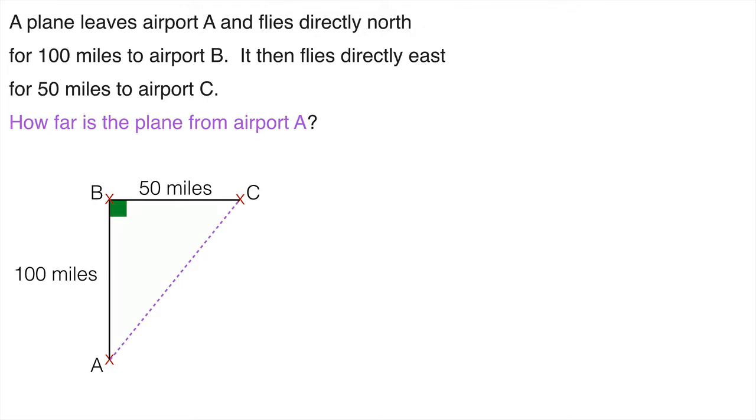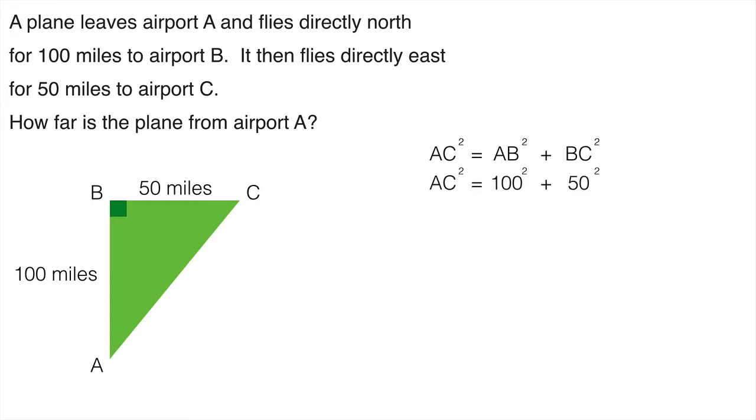Now what we've actually created here is a right angled triangle and we have to find the length AC. Now AC is the hypotenuse. We use the formula that AC squared is equal to AB squared plus BC squared. We can now substitute in those values that we have. Well AB is 100 and BC is 50.